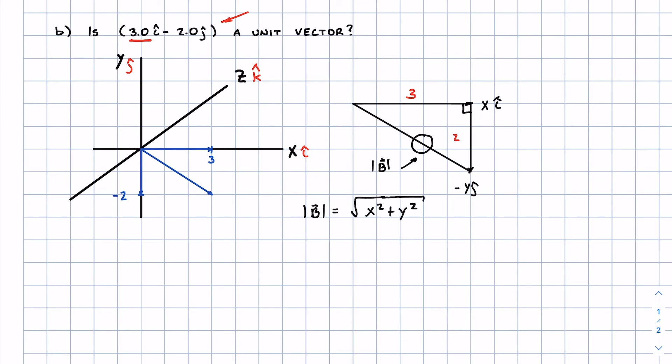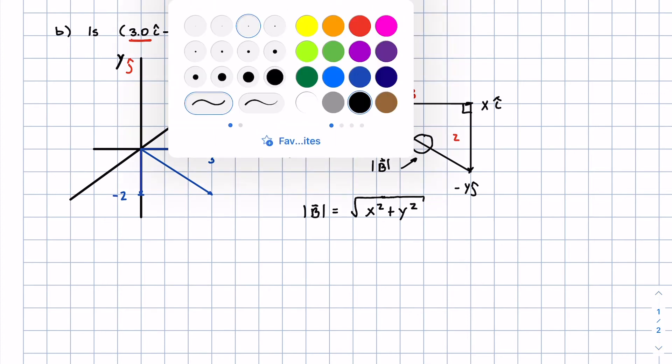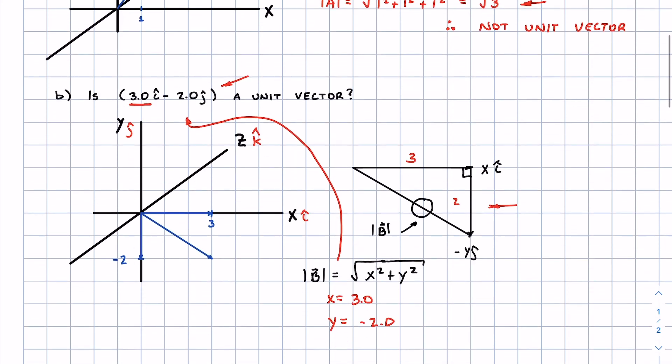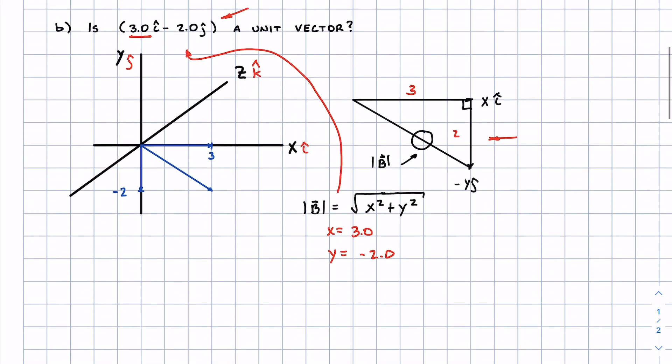Well you ask yourself, what's x, what's y? Let's look back up here. X is equal to 3.0 and y is equal to negative 2.0. The negative just means that's the direction. It's in the negative direction, so that's why we accounted it downwards right there. If it would have been positive, it would have been up. So now let's see if this is a unit vector.